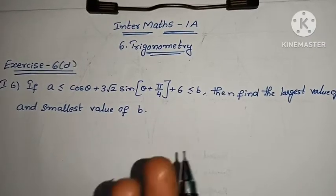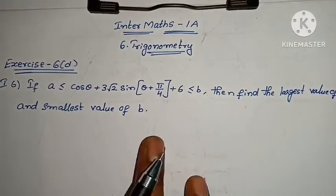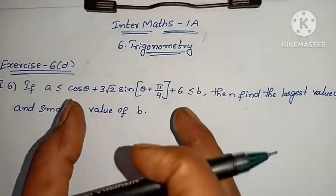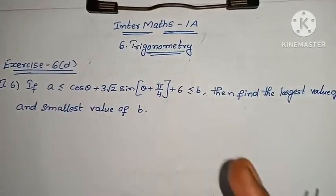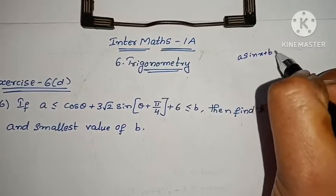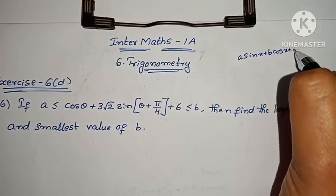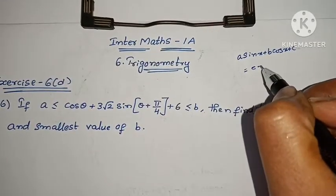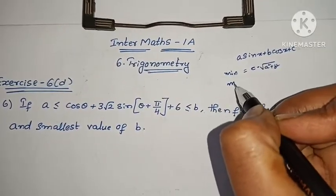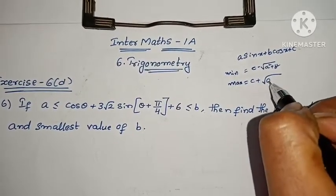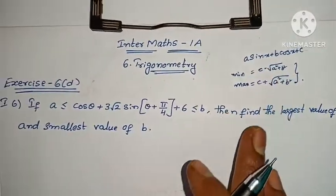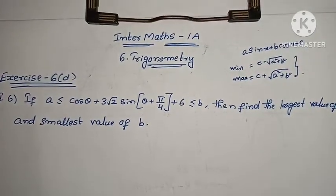We need to find the largest value of A and smallest value of B. The function is of the form A·sinx + B·cosx + C. The minimum value is C minus √(A² + B²) and the maximum value is C plus √(A² + B²). The minimum value corresponds to the largest value of A, and the maximum value corresponds to the smallest value of B.